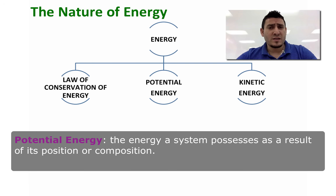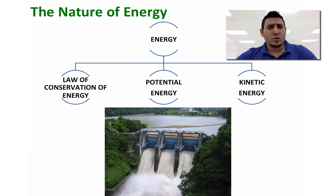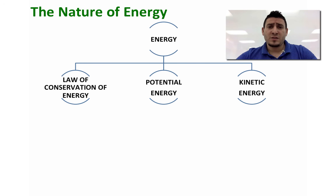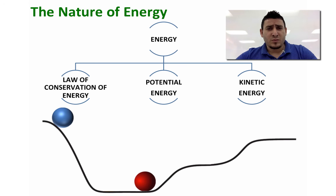Potential energy, by definition, is the energy possessed by an object or a system due to its position or its composition. Potential energy due to position is like water behind a dam, or the potential energy stored in the bonds for chemical reactions before combustion. And finally, kinetic energy is the energy due to motion.